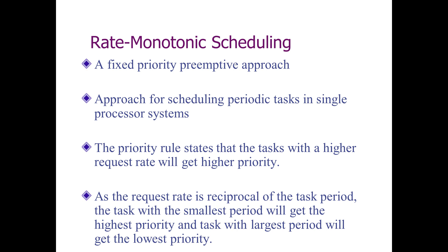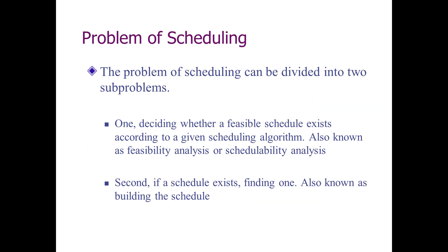In rate monotonic scheduling, the smaller the period, the higher the priority — it is a fixed priority preemptive approach. Since the request rate is the reciprocal of the task period, the task with the smallest period gets the highest priority, and the task with the largest period gets the lowest priority.